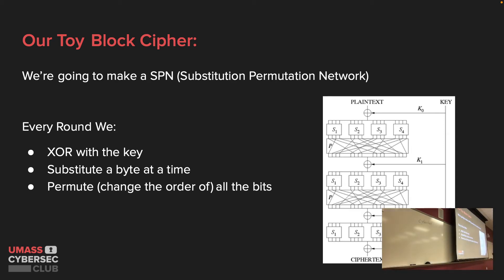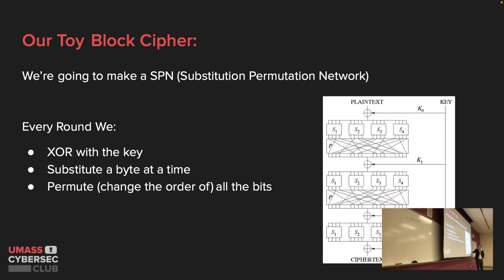Looking at the structure: we have our input plaintext and output ciphertext. We input our key k0 through k3 — you can assume those are anything generated from the key. In an algorithm like DES, k0 is just the first quarter of the key. The XOR symbol means the binary 'either or' operator — it returns true if only one of your inputs is true. We XOR the key with the plaintext, substitute it through an S-box, and then permute — reordering all the bits — so the first bit doesn't always correlate with the first bit of output. We shuffle it between every stage to make it more random.